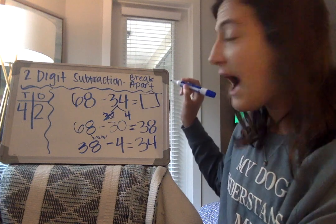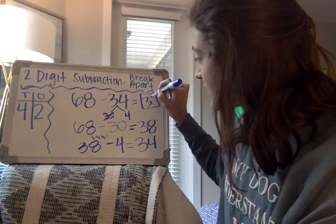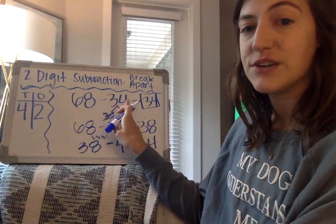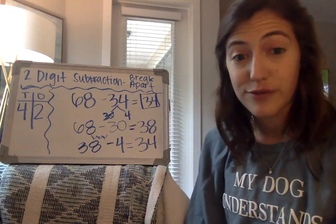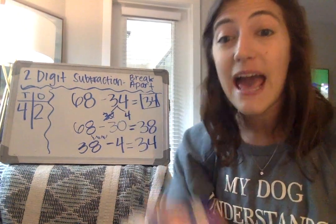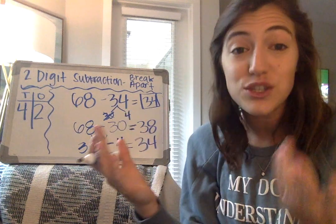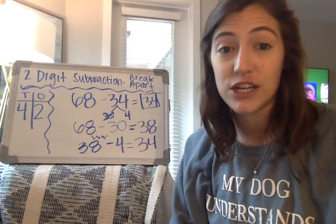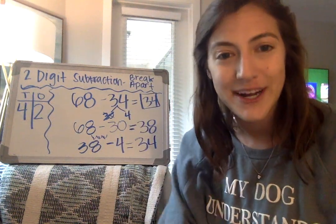So now I fill in the box with my answer. 68 minus 34 equals 34. I hope this was helpful and feel free to try this with any two-digit number within 100 on your own in your workbook. Have fun!